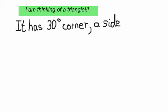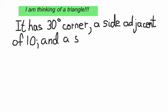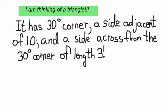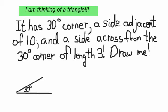So let's have an example here. I'm thinking of a triangle. Here's the triangle. It's got a 30-degree corner, a side next to that corner of 10, and a side across from that 30-degree corner of length 3 units. So draw that triangle. It looks something like that — there's a 30-degree angle with two lines, you're told the length of that line, and the side across is 3.